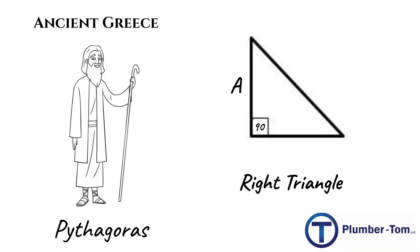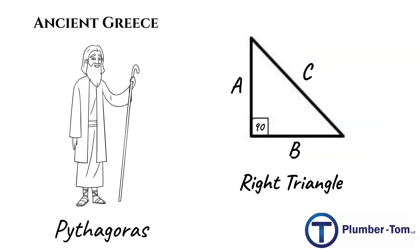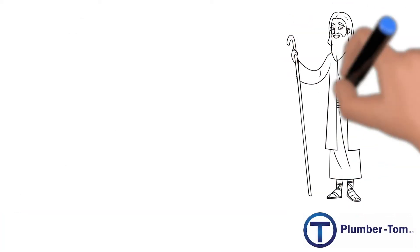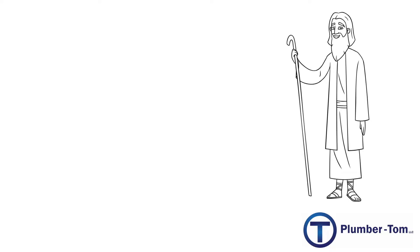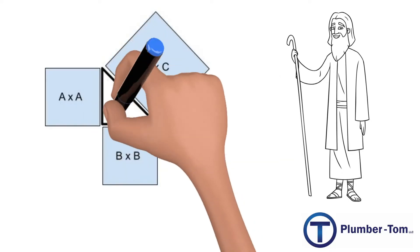He spent a particular amount of time on the right triangle or a triangle with a 90 degree angle. As Pythagoras studied this triangle he discovered that if he were to multiply each of the sides by itself or square the side,